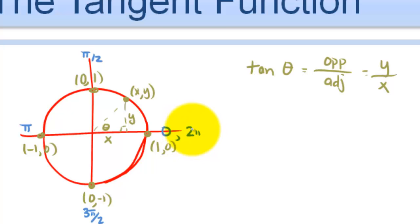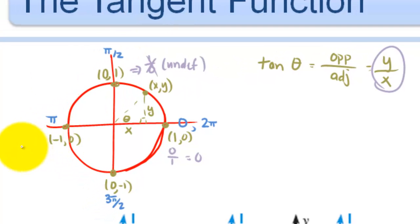Now, I think I'm going to just use purple to kind of say what y over x is in each of these. y over x is going to be 0 over 1, which is 0. y over x here is going to be 1 over 0, which is undefined. Over here, we have 0 over negative 1, which is still 0. And over here, we are going to have negative 1 over 0, which is undefined.